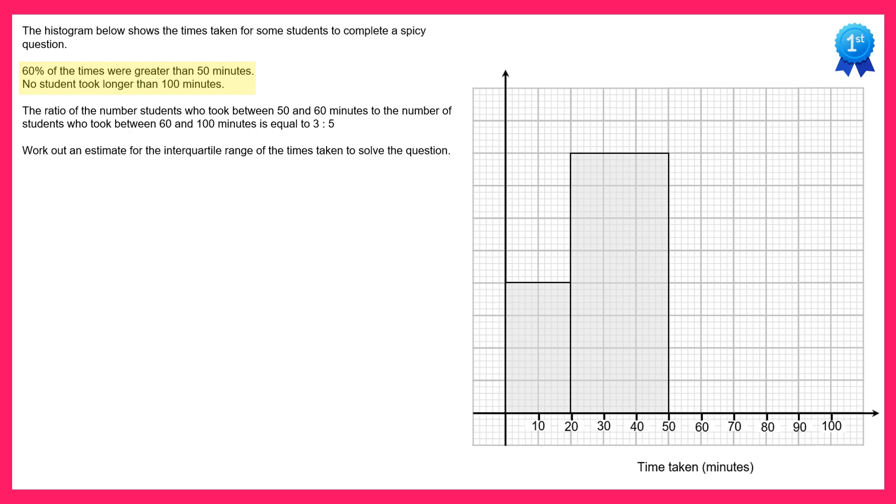For a histogram, the height of the bar doesn't tell you its frequency, it's instead the area of the bar. So let's work out the area of the two bars that we've got in terms of large squares. The first bar is two large squares along the bottom and four large squares along the height, that's 2 times 4 which is 8. And the second bar is 3 squares along the bottom and 8 squares high, so 8 times 3 that's 24 squares.